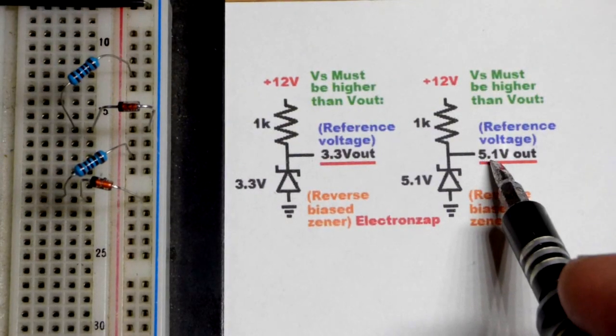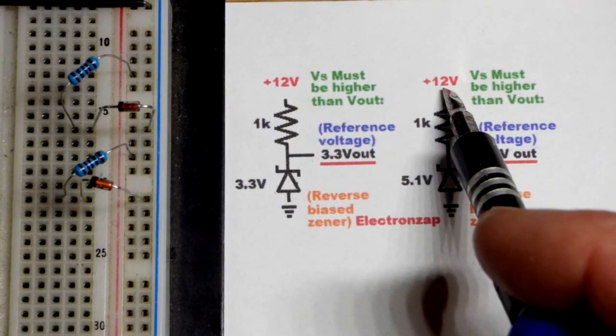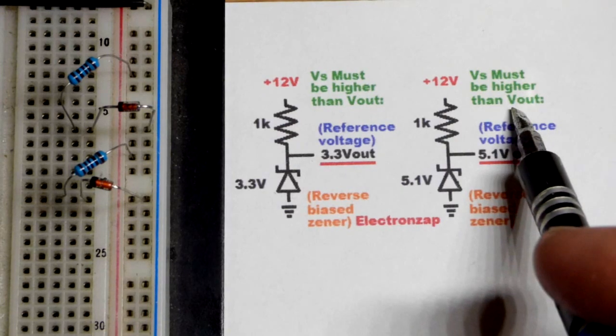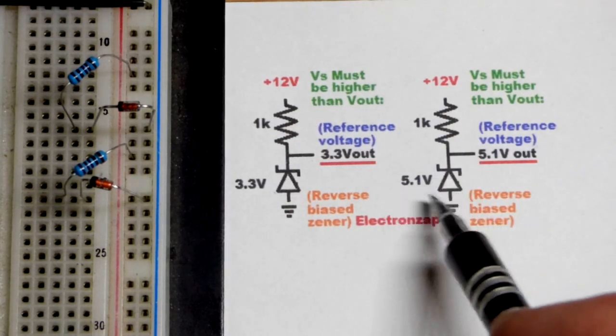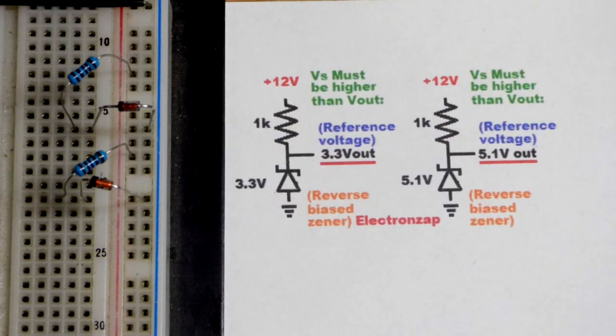But here we have the same thing. We got about 5.1 volts that's going to come out regardless of the supply voltage, as long as the supply voltage is high enough above the Zener voltage. So probably like a couple of volts if you're using a 1k resistor.